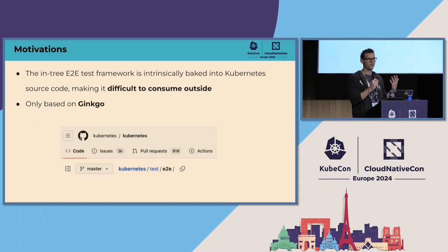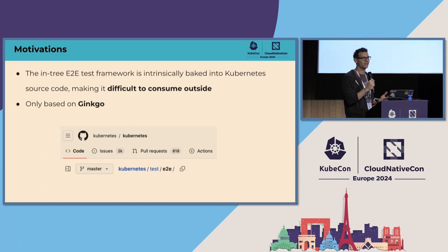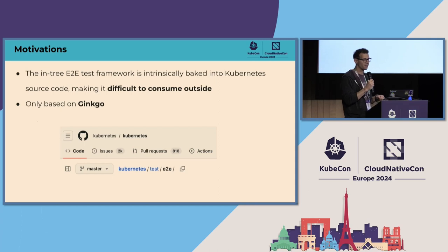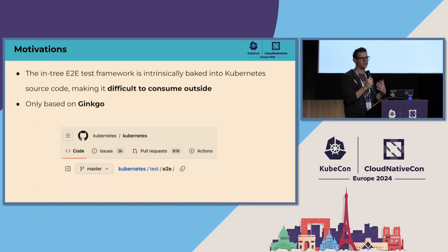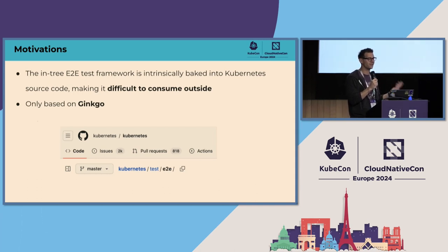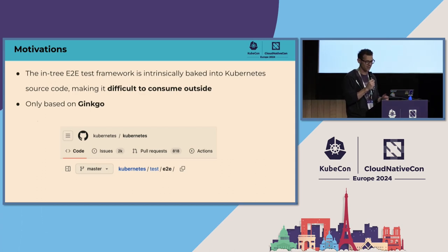Plus, it's based on Ginkgo. Ginkgo is a testing framework for Go that has its own DSL. It's similar to a behavior-driven development framework, so it has its own set of instructions and its own way to declare tests that is quite different from what you use when you're writing regular Go tests.